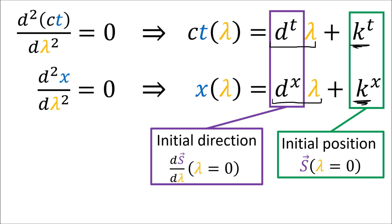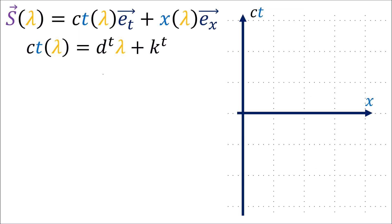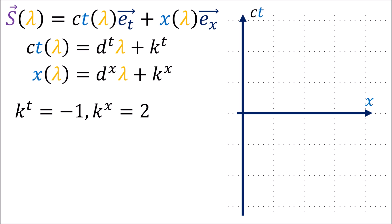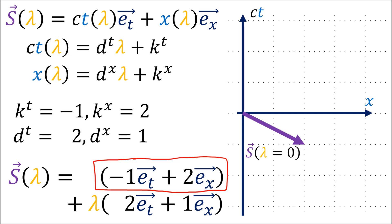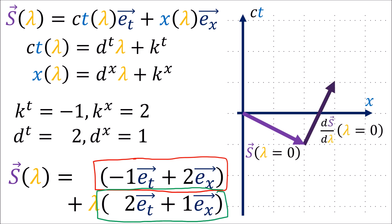The solutions are a constant multiplied by lambda plus another constant. The additive constants k_t and k_x represent the initial four-position s of the geodesic curve when lambda equals 0, and the constants that multiply lambda give the initial direction vector ds/d lambda when lambda equals 0. As our first example, if we set k_t equals negative 1, k_x equals 2, dt equals 2, and dx equals 1, our initial starting vector is -1 e_t plus 2 e_x, and the initial direction vector is 2 e_t plus 1 e_x. By selecting various values of lambda, we can travel up and down on this line — a straight world line that is a geodesic.